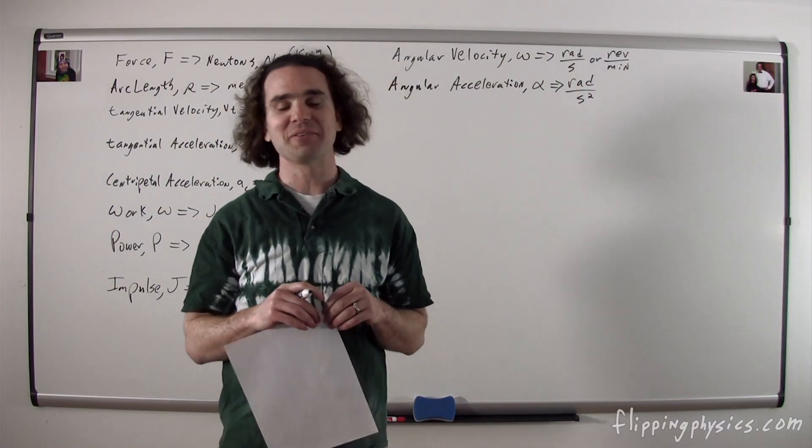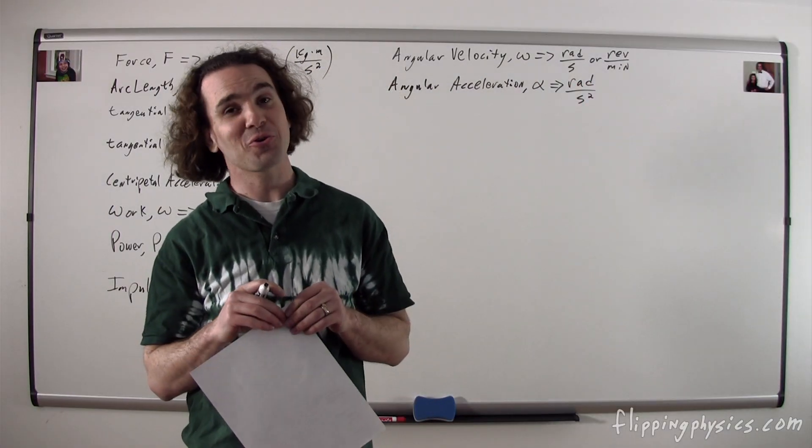Bo, what are the symbol and dimensions for torque? The symbol for torque is a lowercase tau, and torque is in newton meters, which is in fact a joule. However, we don't call it a joule, just to distinguish torque from work and energy, and perhaps remind us that torque is a vector while work and energy are scalars.